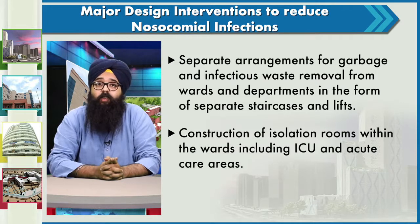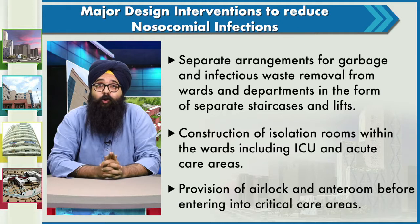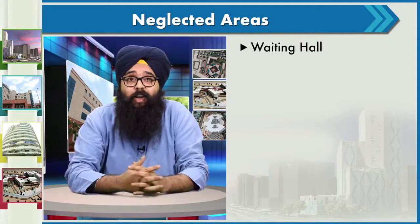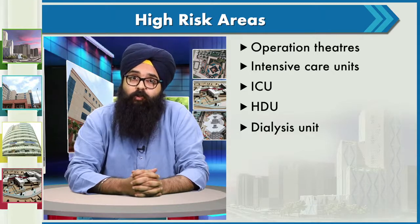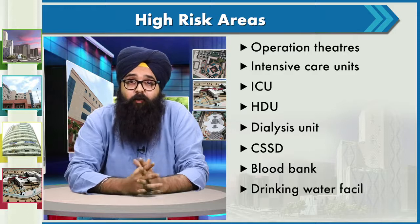There should be separate arrangements for garbage and infectious waste removal from wards in the form of separate staircases and lifts. Construction of isolation rooms within wards, including ICUs and acute care areas, should be done scientifically, with provision of air locks and anterooms before entering critical care areas. Neglected areas are waiting halls and OPDs. High risk areas are operation theatres, ICUs, HDUs, dialysis units, CSSD, blood bank, and drinking water facilities.